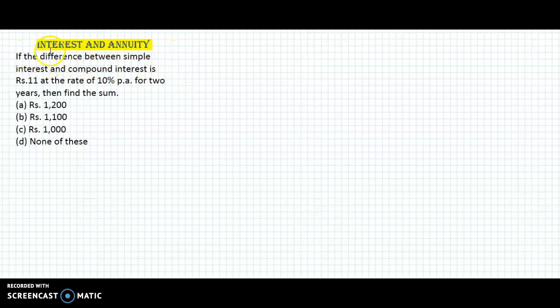Hello and welcome back. We now discuss an example from interest and annuity. The question is, if the difference between simple and compound interest is rupees 11 at the rate of 10% per annum for 2 years, then find the sum.